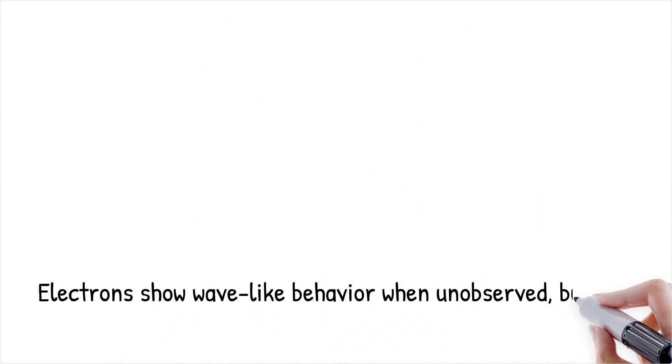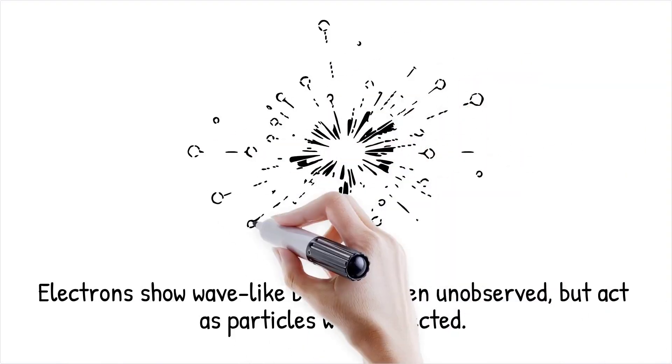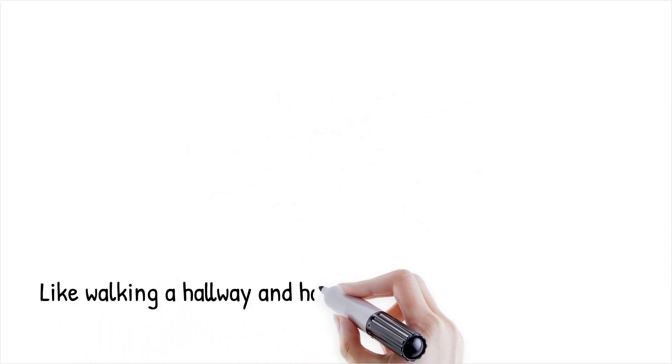In countless experiments, electrons have displayed wave-like properties when unobserved but switched to particle-like behavior when a detector was introduced.